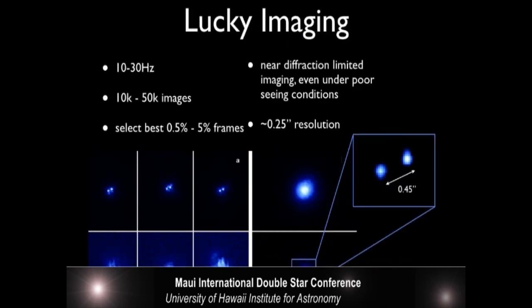Just one slide introduction to what lucky imaging is. I'm sure a lot of you know what it is. Basically the concept is that you take a bunch of images. Your exposure times are generally 10 milliseconds. You do 10 to 30 hertz, 10 to 30 frames per second.